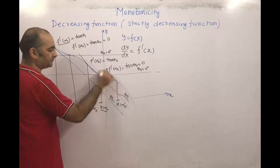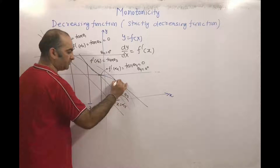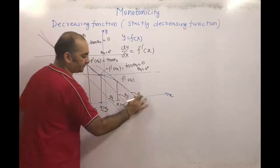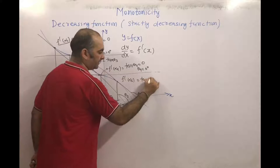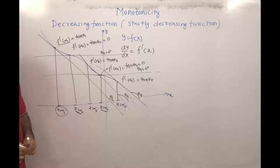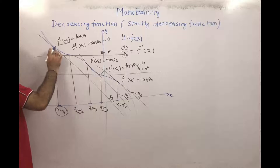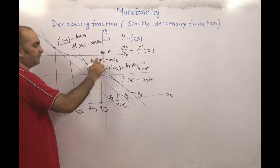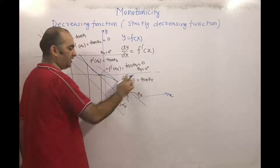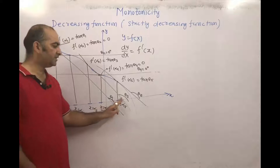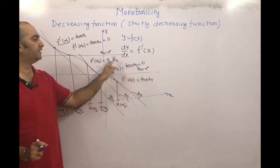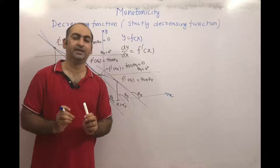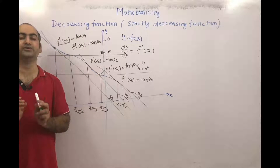Similarly, at x = alpha5, the slope of the tangent is f'(alpha5) = tan(theta5). Now, looking at all points: theta1, theta3, and theta5 are obtuse angles, while theta2 and theta4 are 0 degrees. So on this curve, at any point, the tangent makes either an obtuse angle or 0 degrees with the positive x-axis.